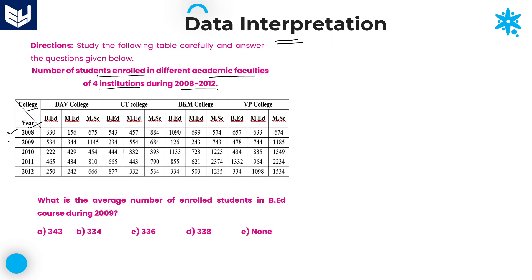The years are from 2008 to 2012, and the information is about the number of students enrolled. All the values in the table are number of students enrolled in different academic faculties — it might be BED, MED, or MSc. There are three different academic faculties and four different institutions: DAV college, City college, BKM college, and VP college, over the years 2008 to 2012.